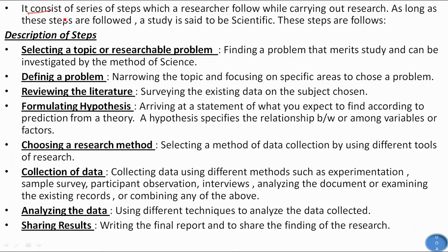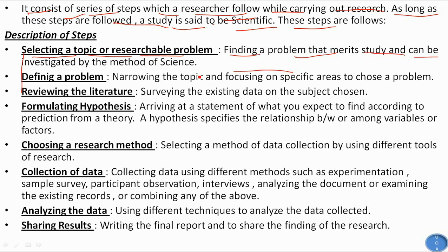Scientific method consists of a series of steps which a researcher follows while carrying out research. As long as these steps are followed, a study is said to be scientific. The first step is selecting a topic or researchable problem — finding a problem that merits study and can be investigated by methods of science. The second step is defining the problem — narrowing the topic and focusing on specific areas to choose a well-formed problem.